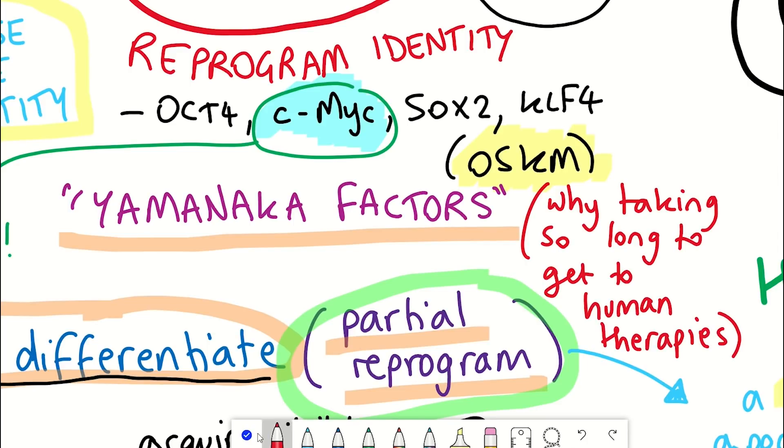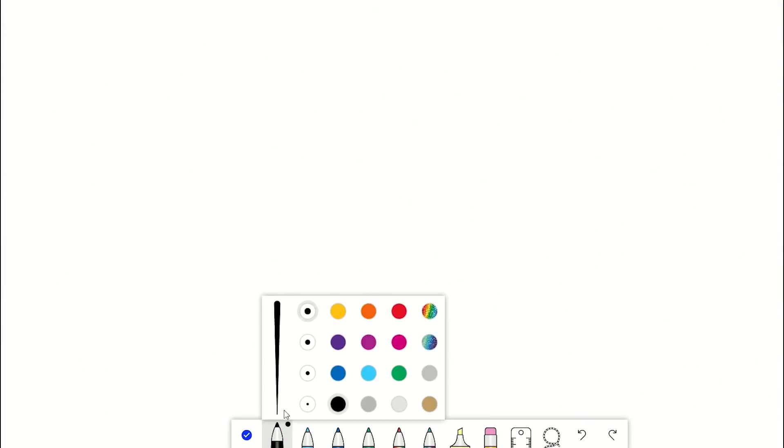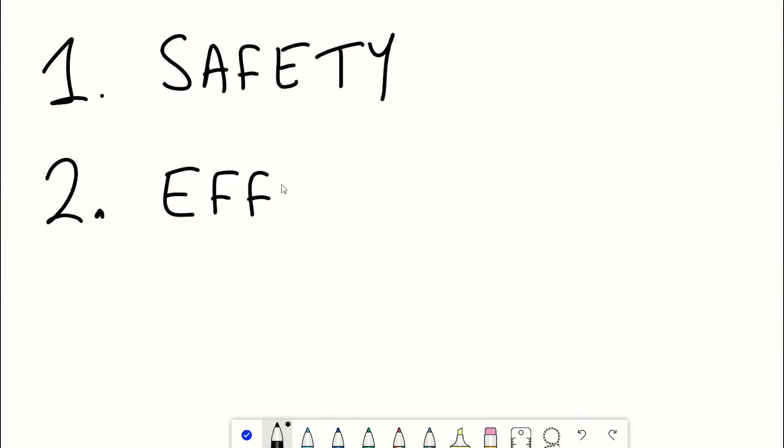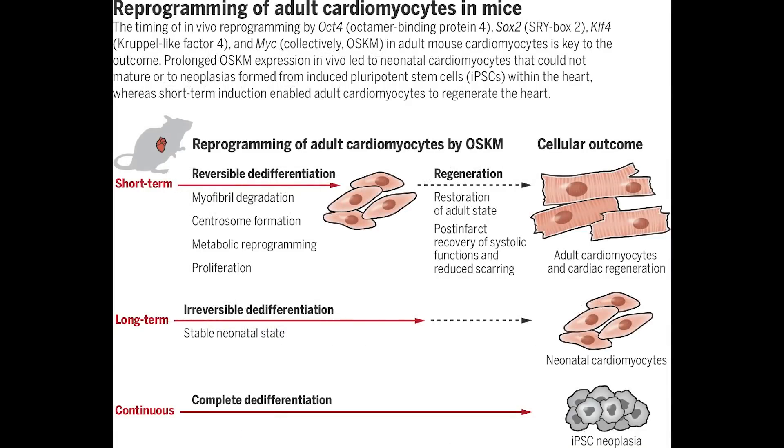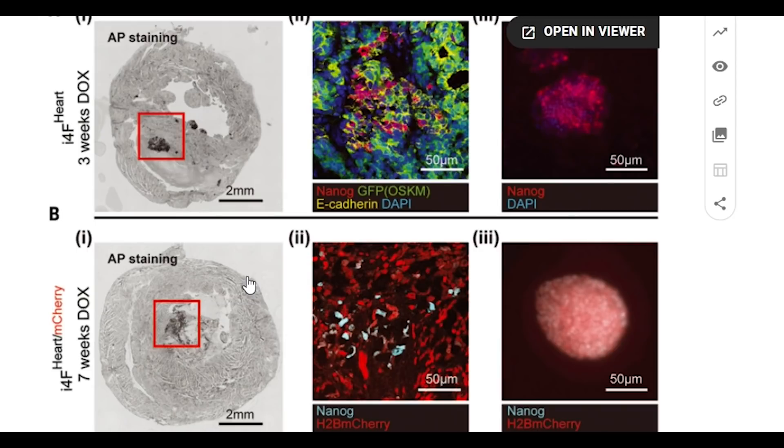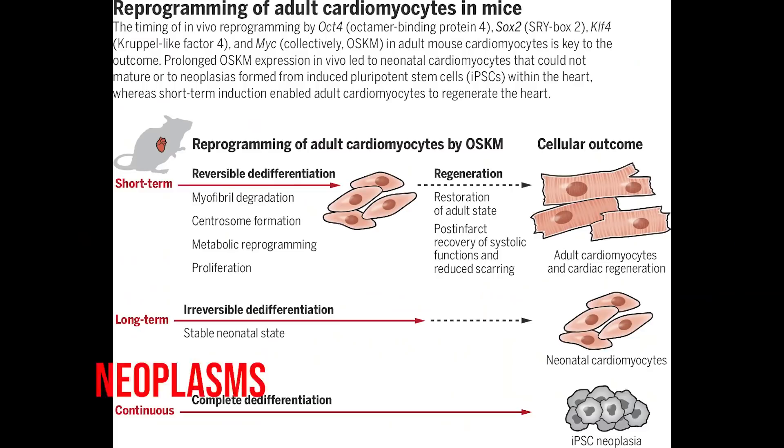Well, numerous reasons, but three main reasons: safety, efficiency, and effectiveness. As we've just seen in this research paper, it was only the short-term application of the factors - a partial reprogramming approach - that was most effective and appeared the safest for the mice, that is no cancerous growths. As you can see nicely summarised in this figure, continuous expression of the Yamanaka factors caused complete de-differentiation and the development of cancerous growths,